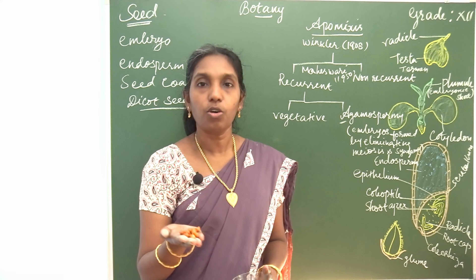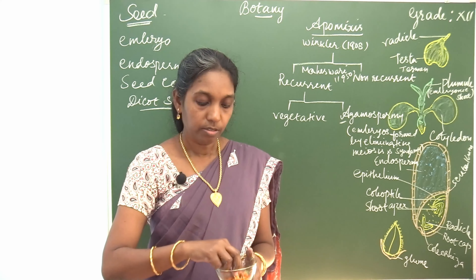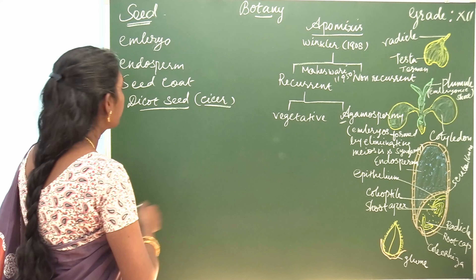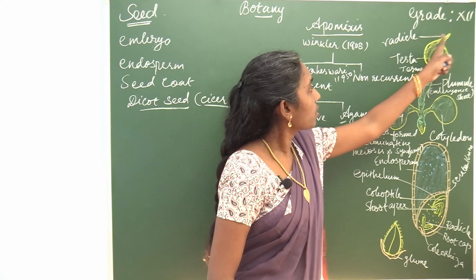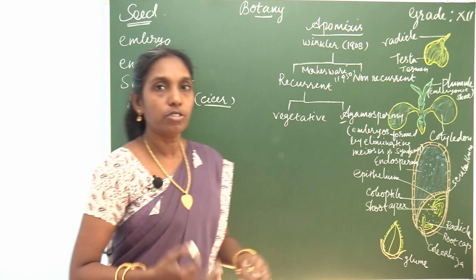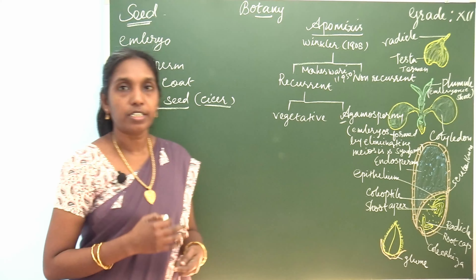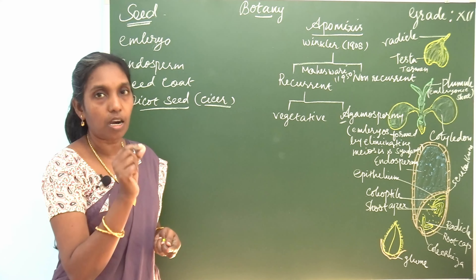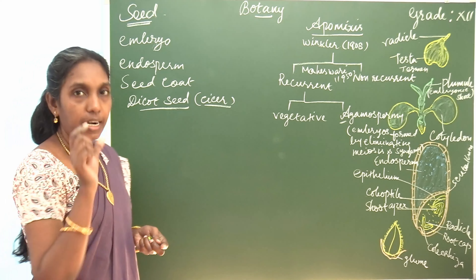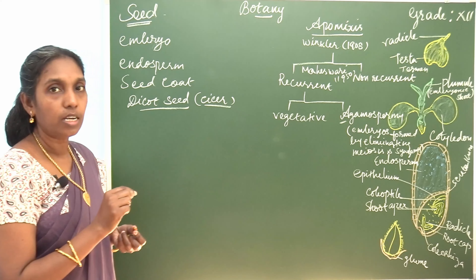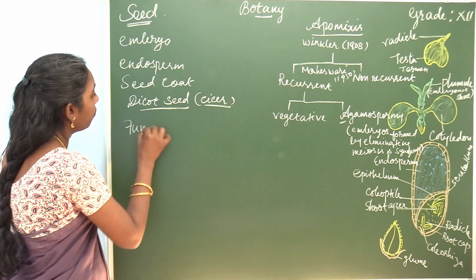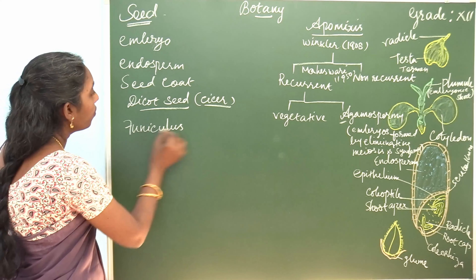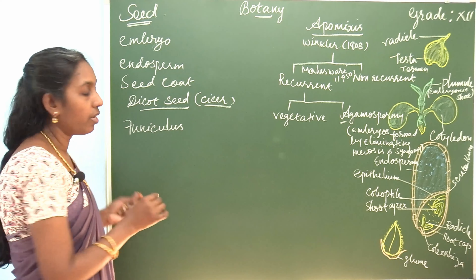This seed consists of a protective seed coat. The seed is attached with a stalk to the fruit wall. The name of that stalk is funiculus. The funiculus disappears leaving a scar called hilum.